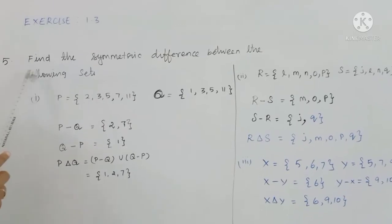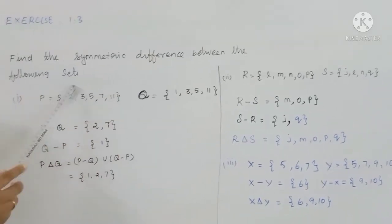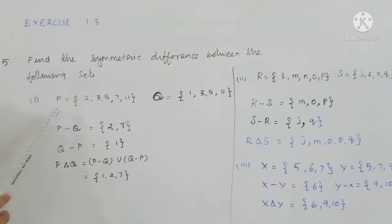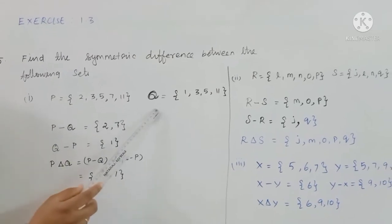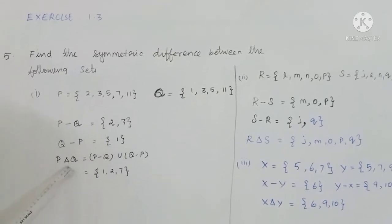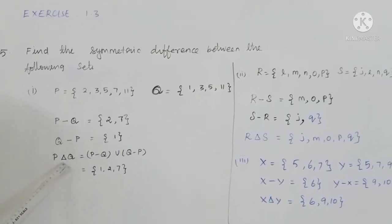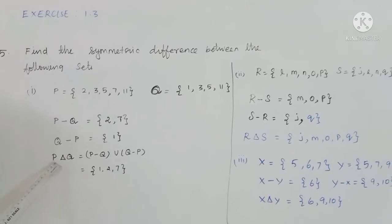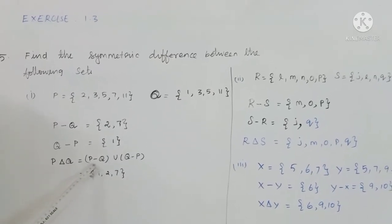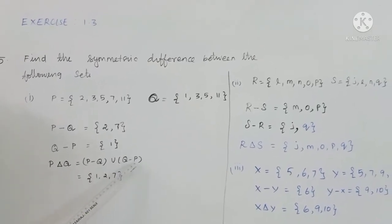Find the symmetric difference between the following sets. Symmetric difference is denoted by the triangle (delta symbol). P symmetric difference Q equals P minus Q union Q minus P.